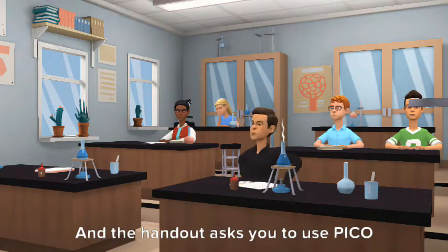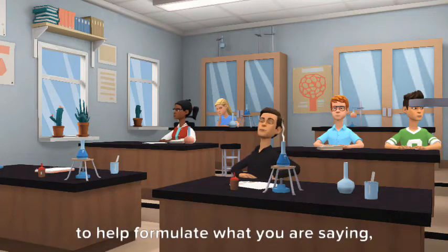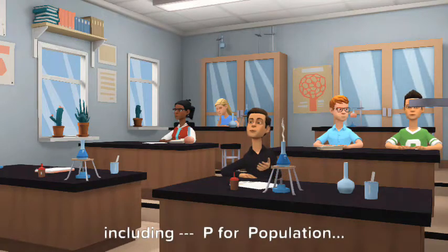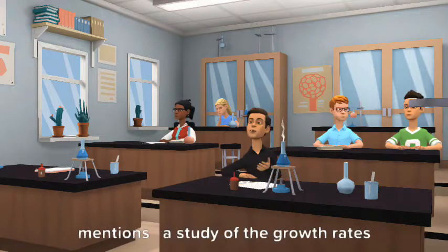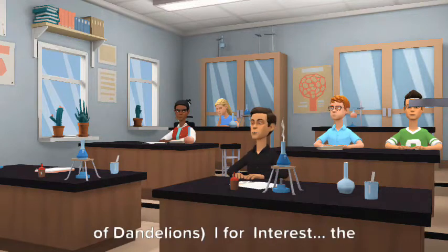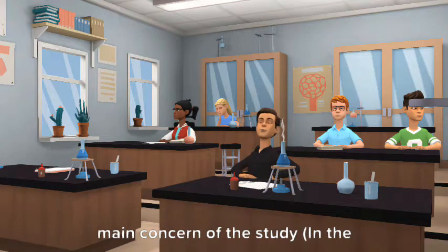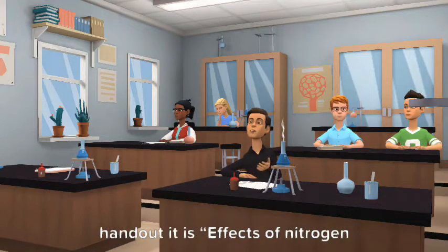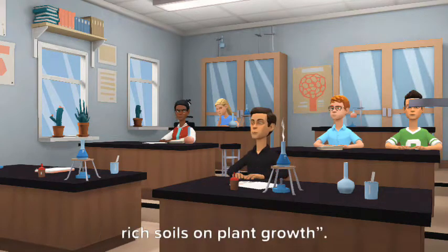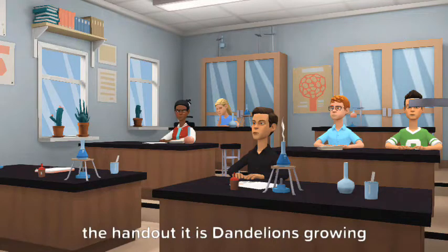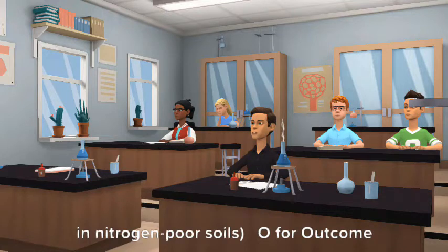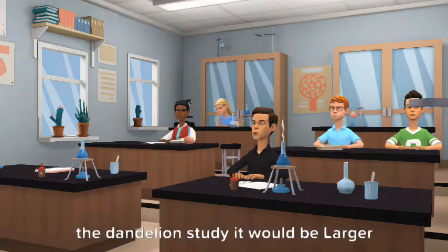And the handout asks you to use PICO to help formulate what you're saying, including P for population, the specific group or individual the research pertains to. The handout mentions a study of the growth rates of dandelions. I for interest, the main concern of the study. In the handout, it is effects of nitrogen rich soils on plant growth. C for comparison, the main alternative group to the group of interest. In the handout, it is dandelions growing in nitrogen poor soils. O for outcome, what result is expected. In the dandelions study, it would be larger leaves.